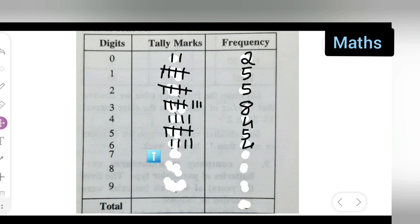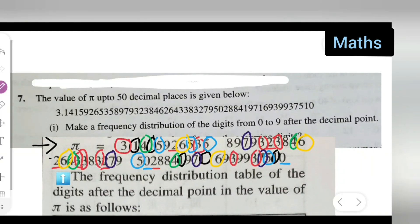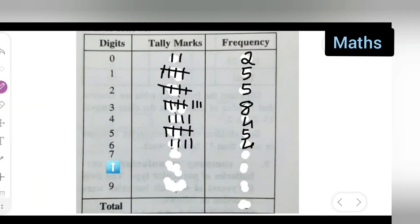Next, how many times does 7 occur? Using purple circles to mark them — the digit 7 occurs one, two, three, and four times. Write down four.